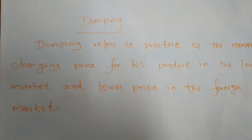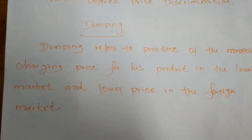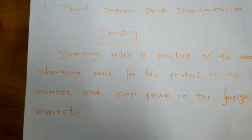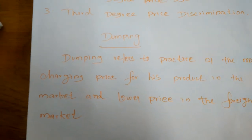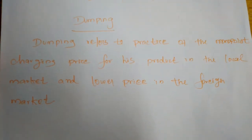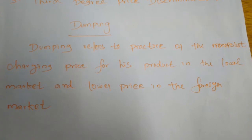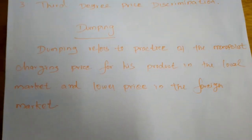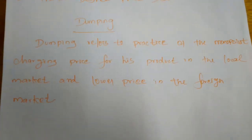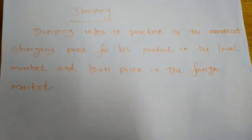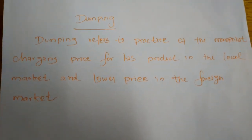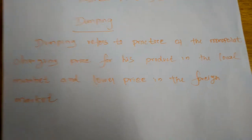Next we will study another concept called dumping. Dumping refers to a practice of the monopolist charging higher prices for his product in the local market and lower prices in the foreign market. When the monopolist fixes a very high price in the local market and a very low price in the foreign market, and when surplus commodities are produced, the producer will engage in dumping — that is, the accumulation of commodities.